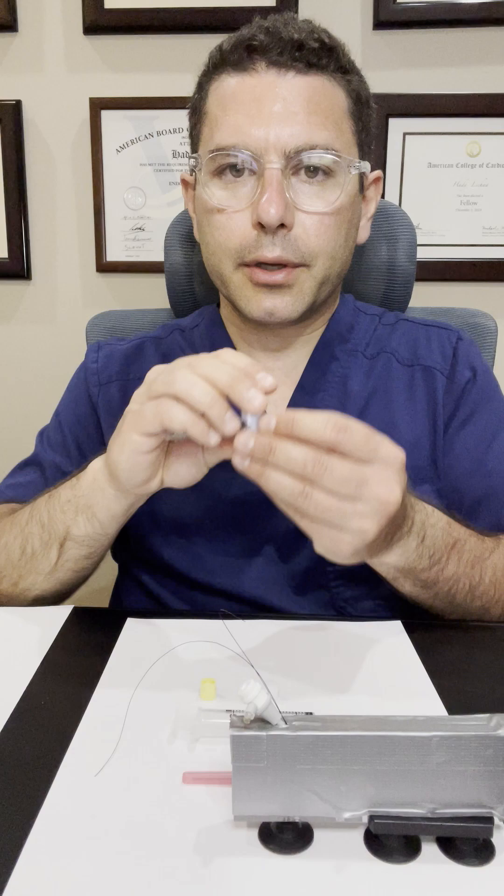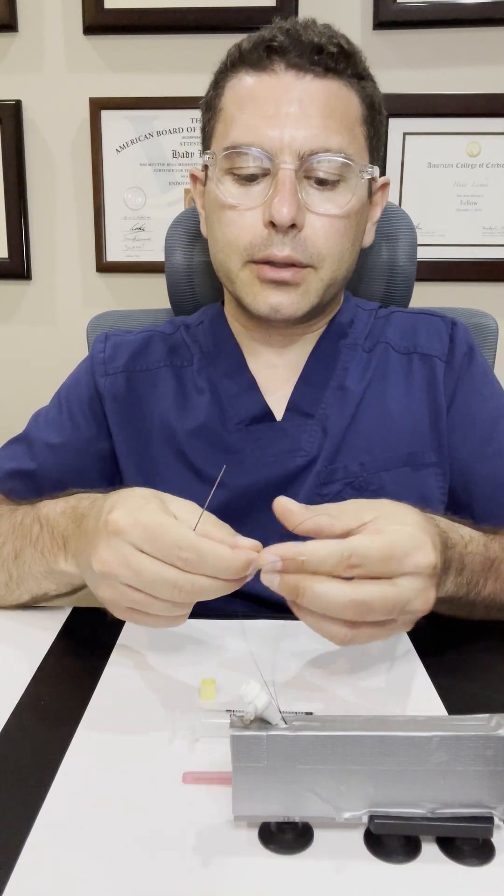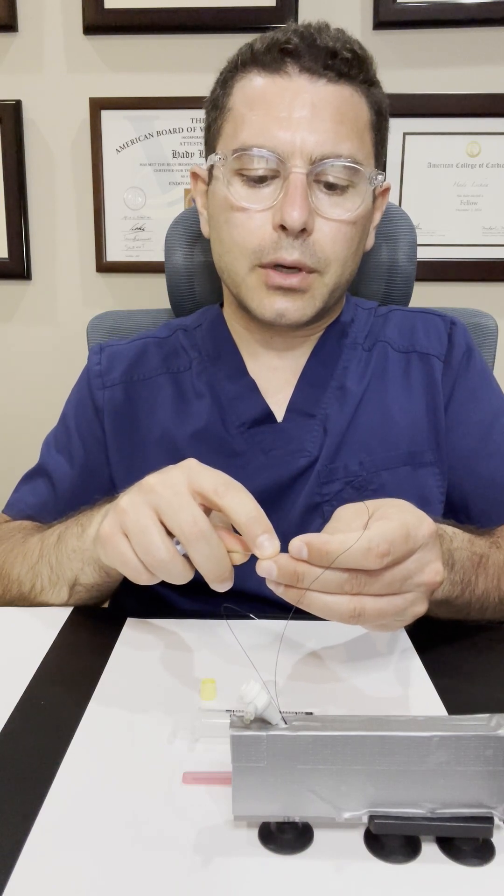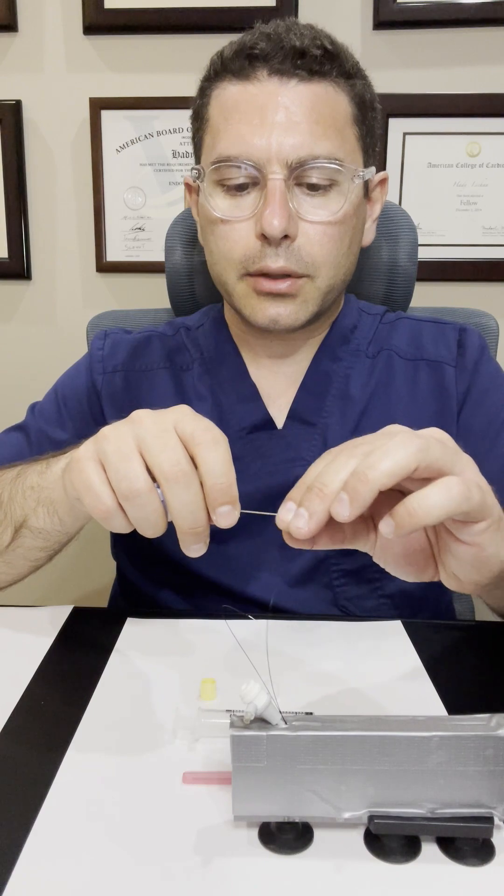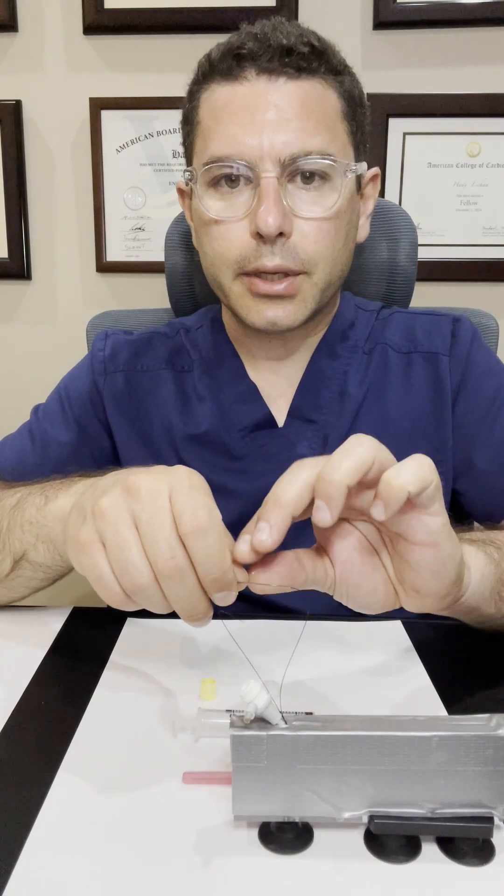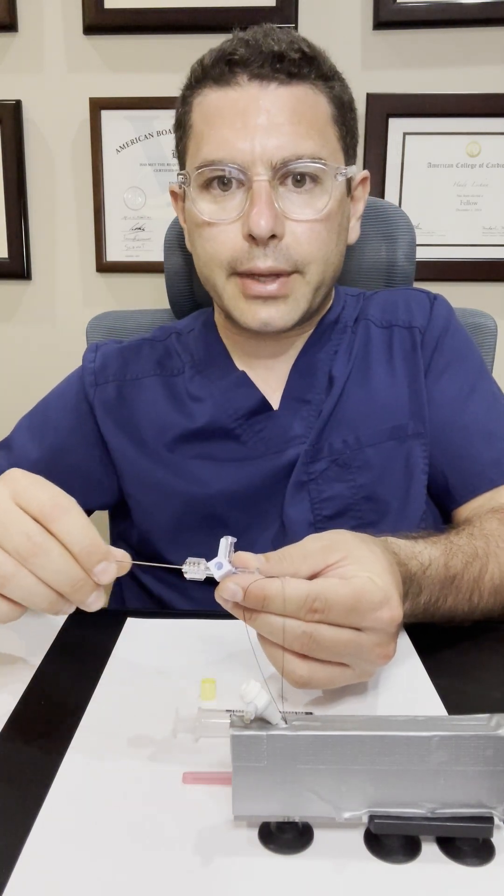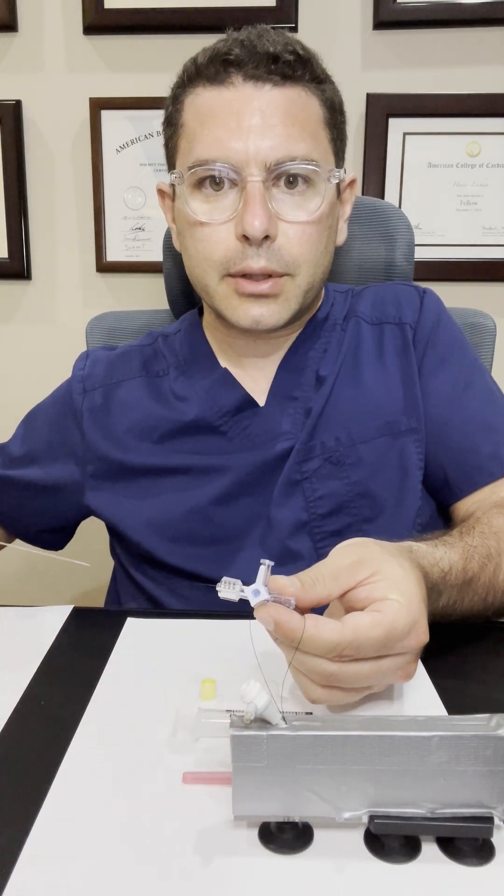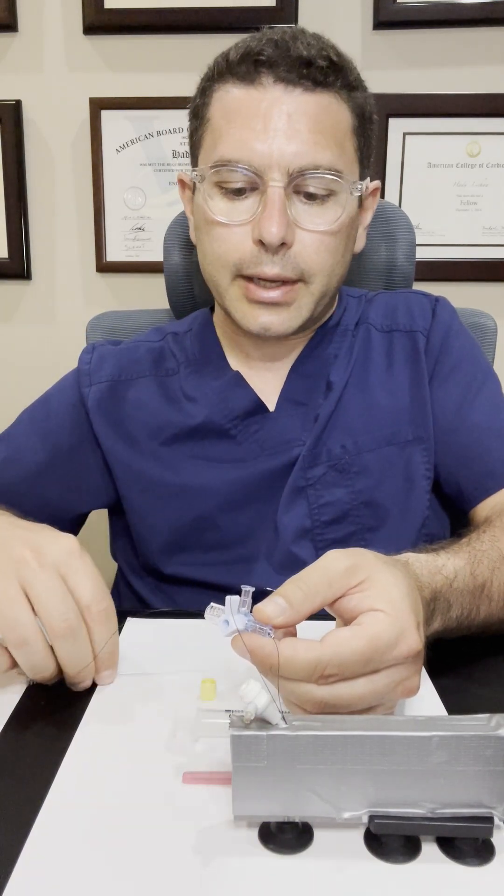So the needle introducer that's through the stop-cock is threaded over the non-locking suture of the per-close. You can see here that I don't have to introduce it all the way in, maybe a couple of centimeters in. And then I'll use the needle introducer to pull that through. And you can see how it's easily pulled through.